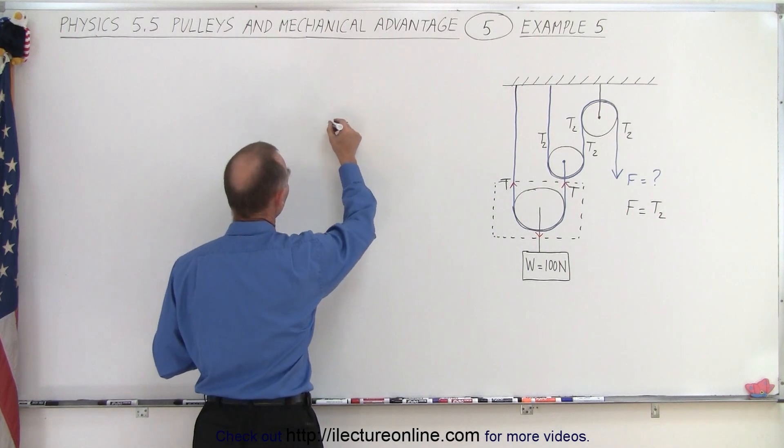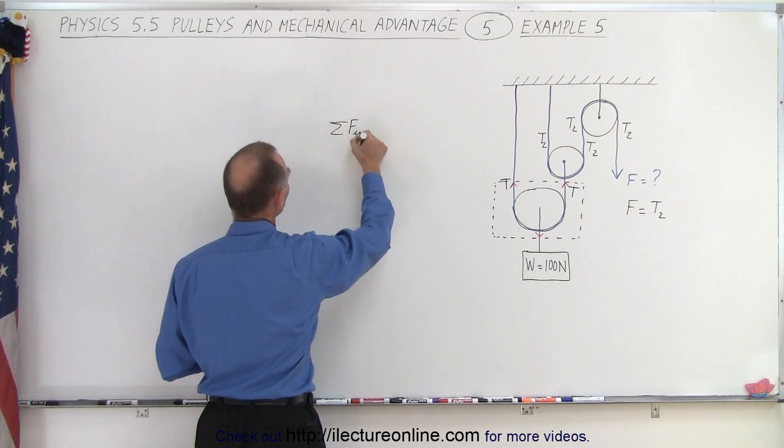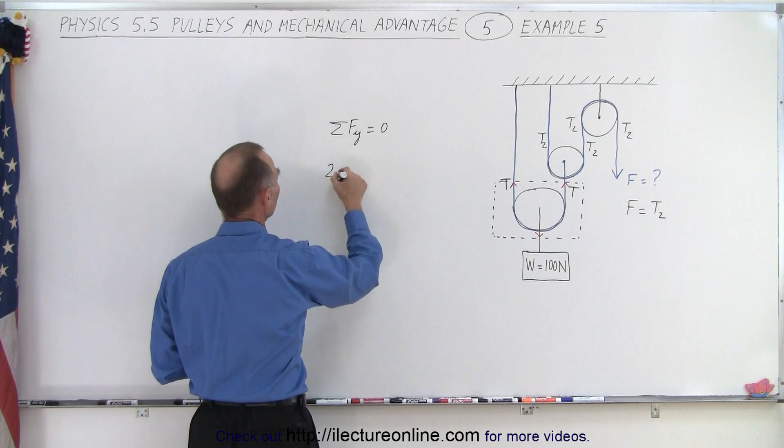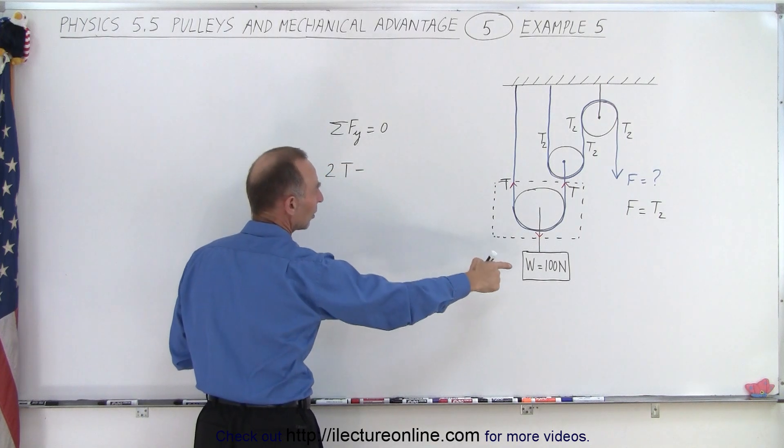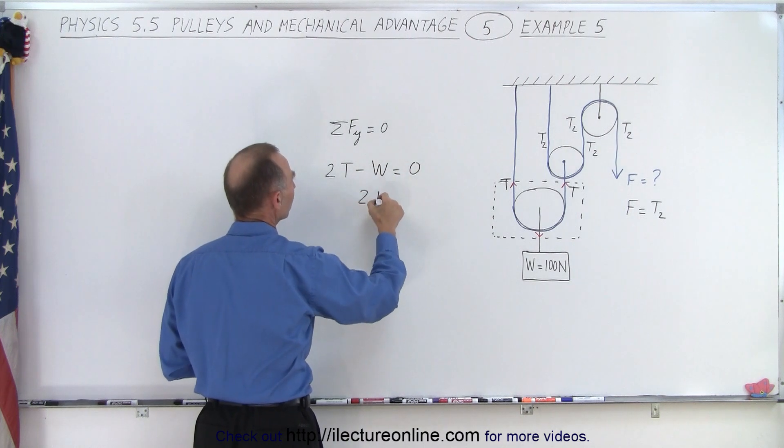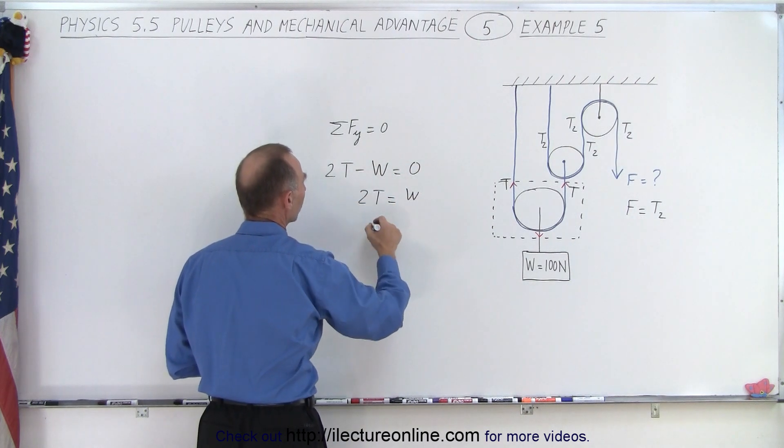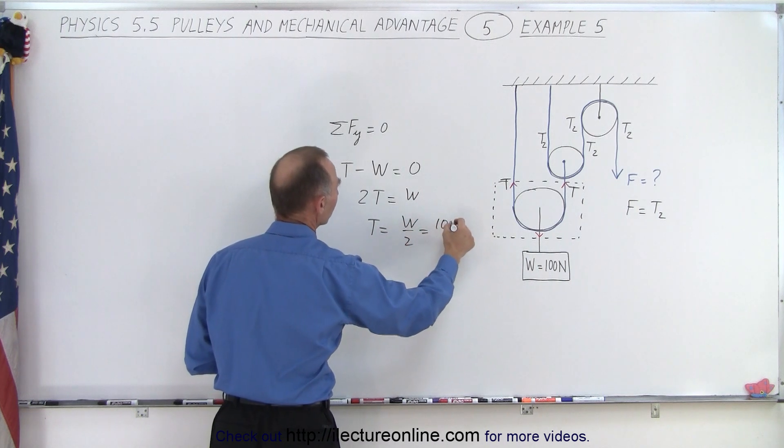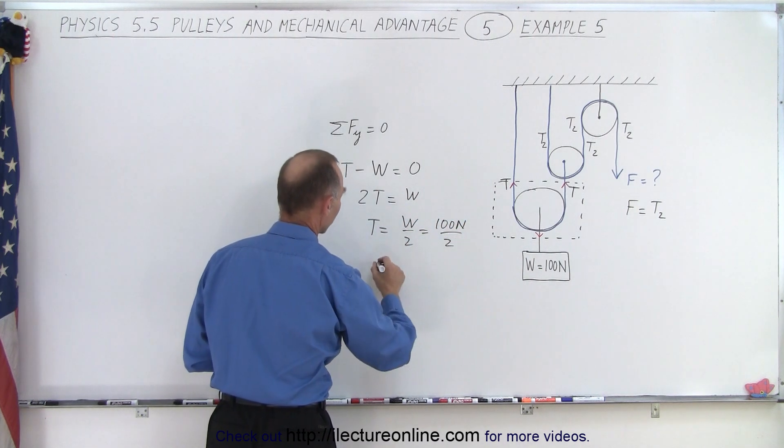So we can say that the sum of the forces in the y direction add up to zero. So we have two tensions upward, so two tensions upward minus the weight downward is equal to zero. That means 2T equals the weight, or T equals the weight divided by 2 which is 100 newtons divided by 2, so therefore T equals 50 newtons.